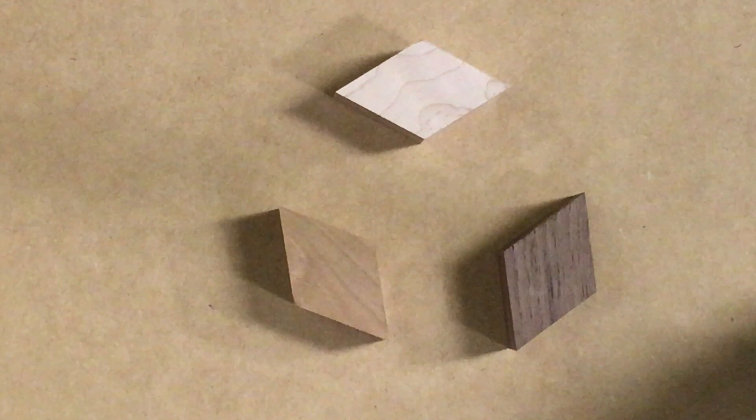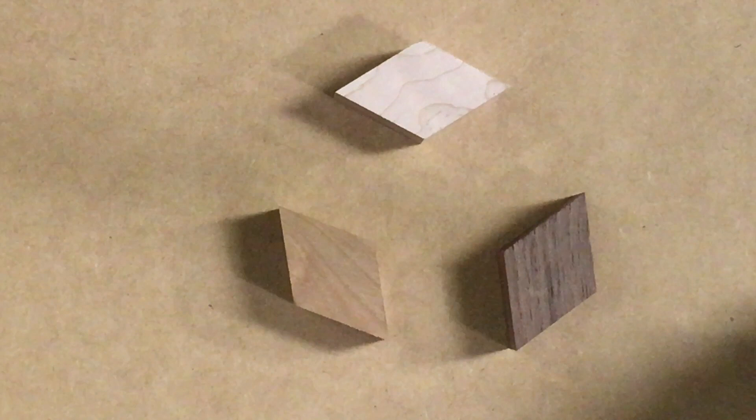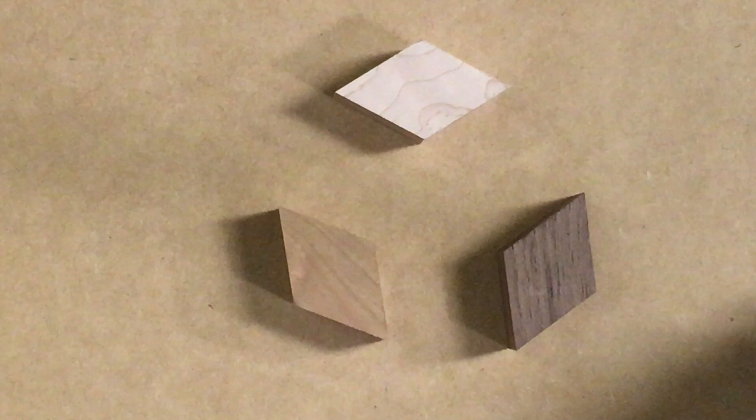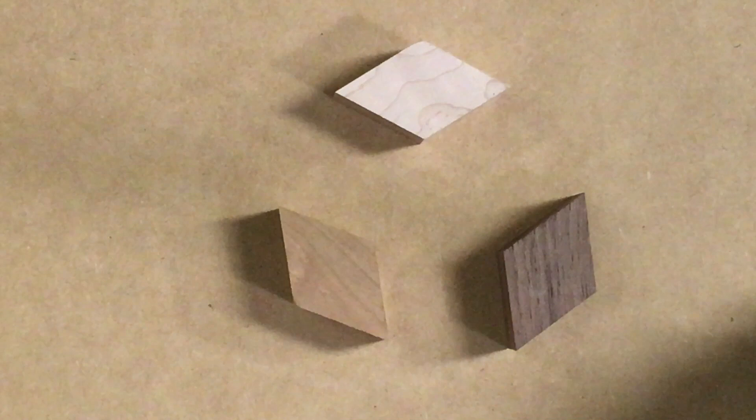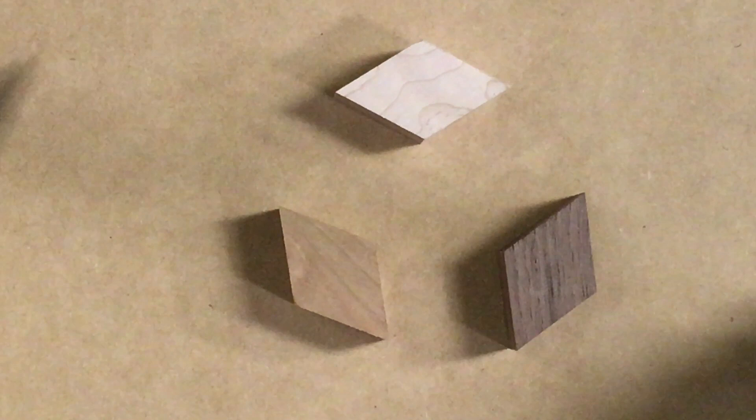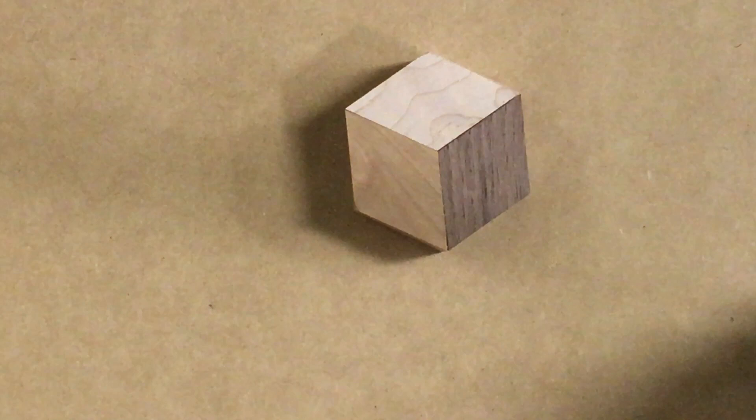You start by cutting a bunch of identical pieces from three different wood species. The board I showed you used 22 pieces of curly maple, 25 pieces of cherry, and 25 pieces of walnut. Each piece is a trapezoid, more specifically a rhombus, which means that all four sides are the same length. Two of the angles are 60 degrees, the other two are 120 degrees. Three of these pieces fit together to form a cube.